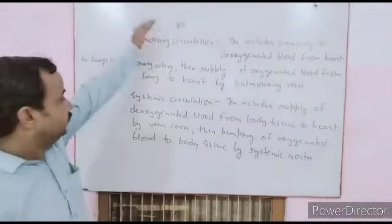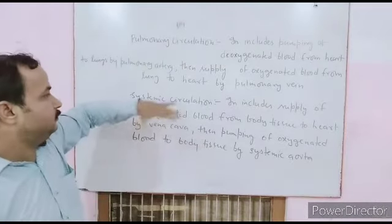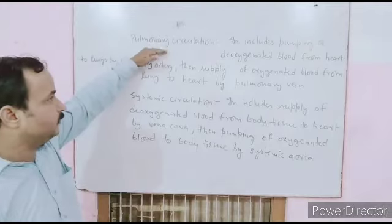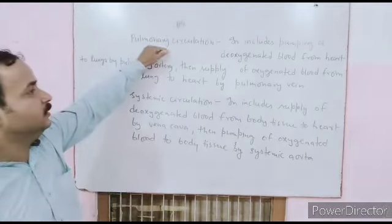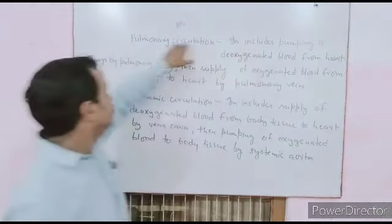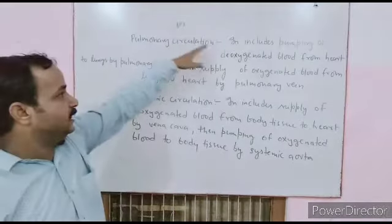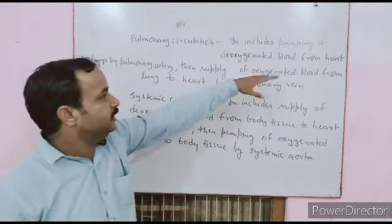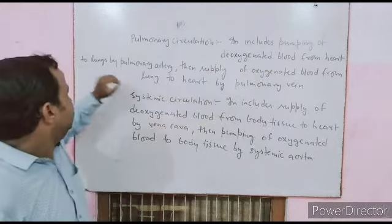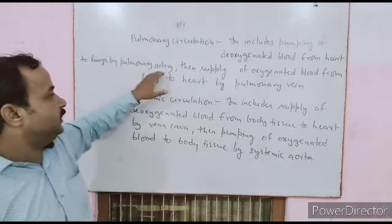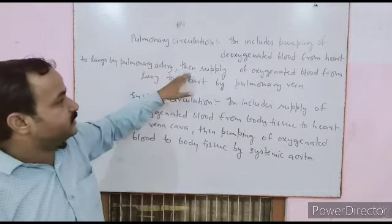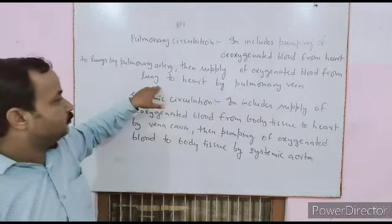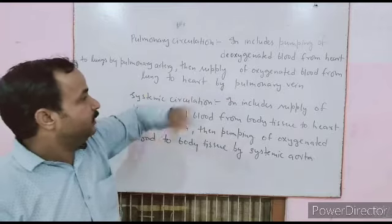Pulmonary circulation includes pumping of deoxygenated blood from the heart to the lungs by the pulmonary artery, and then supply of oxygenated blood from the lungs back to the heart by the pulmonary vein.